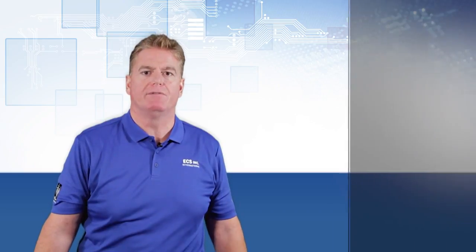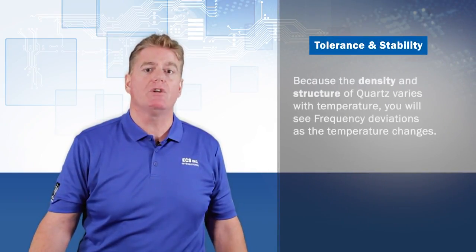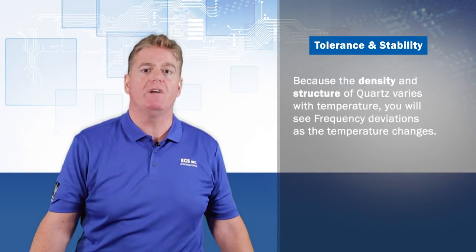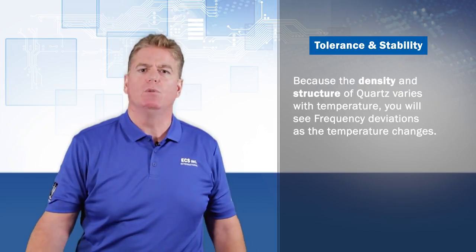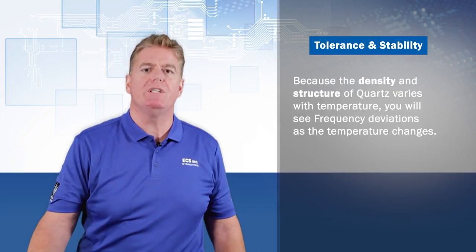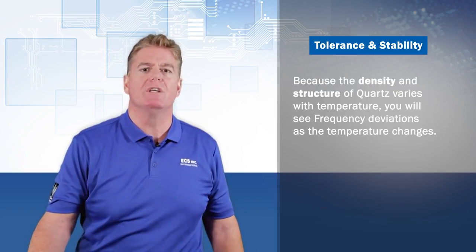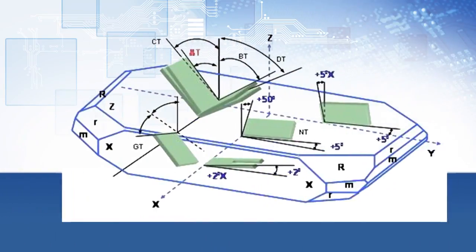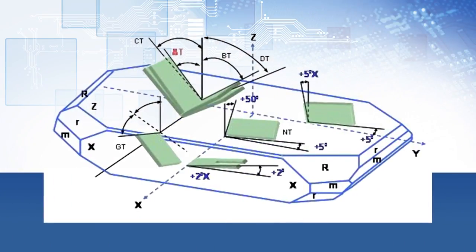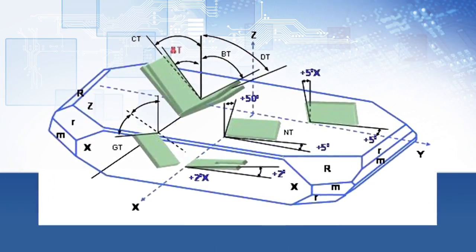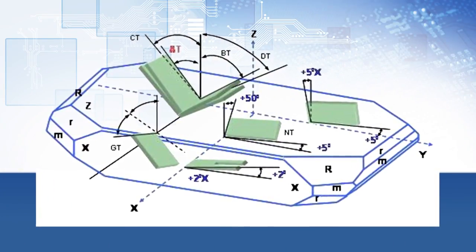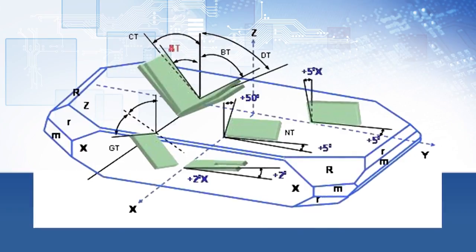To understand tolerance and stability, we must first look at the quartz itself. Because the density and structure of quartz varies with temperature, you will see frequency deviations as the temperature changes. By cutting the quartz at different angles, you can optimize the quartz blank to perform better in a specific application.